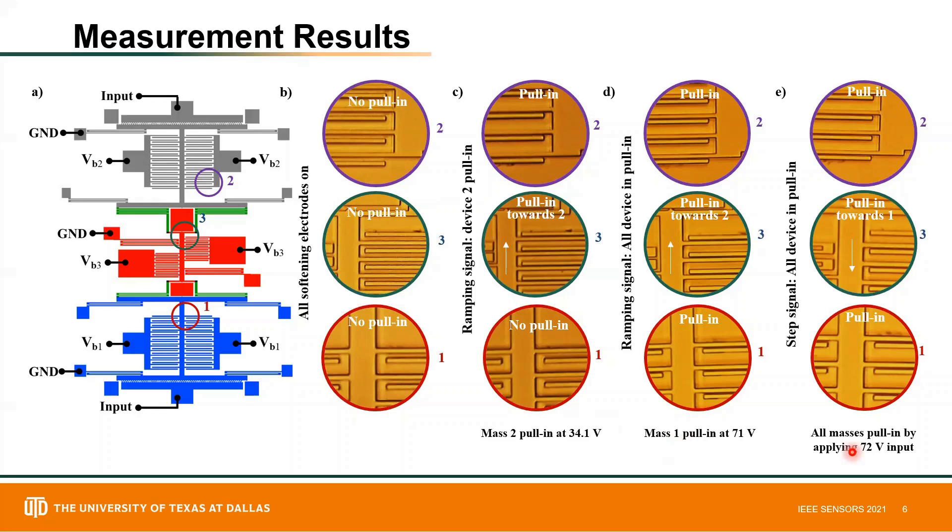When an abrupt voltage of 72 volts is applied to the comb-drive actuator, all masses are going to pull in. But mass three moves towards the stiffer of the two, which in this case is mass one, so it pulls downward.